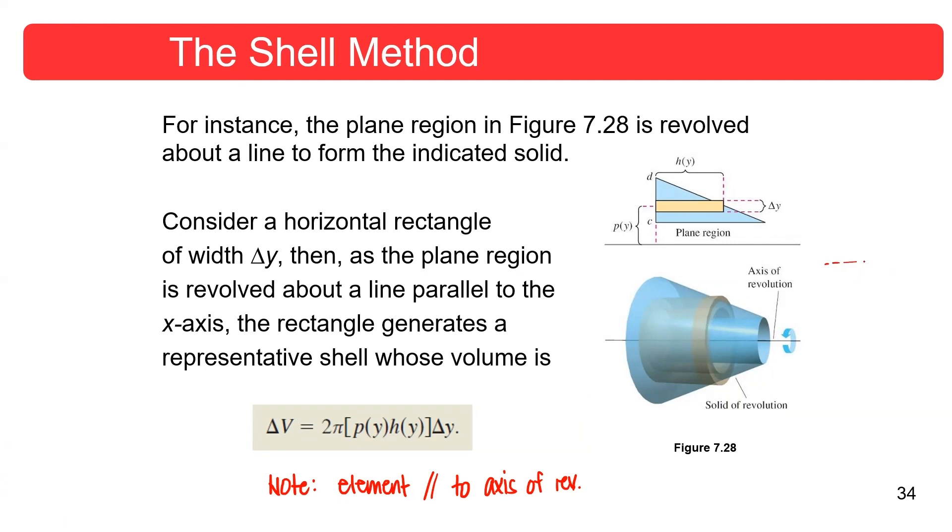So I'll just draw, for example, here. Say this is the axis, and then this is your element, the orange element. It would form sort of like a shell. And then the parts are, this would be your H. This is your R. But then since there is a thickness, that is dr.